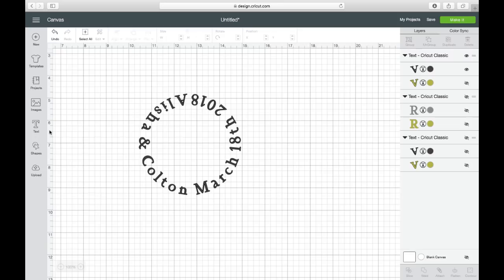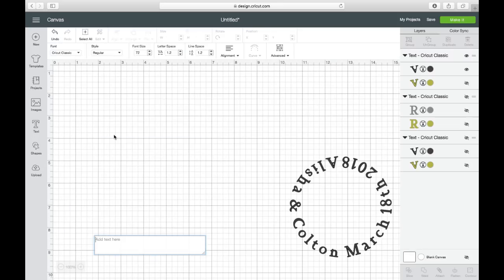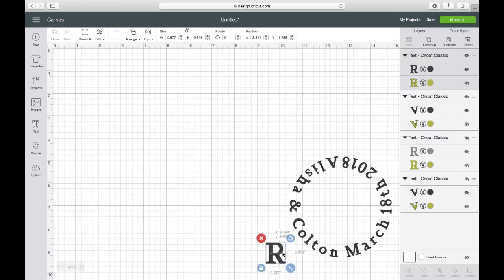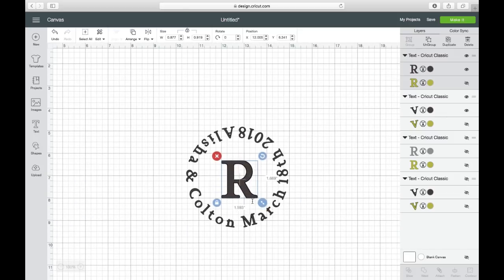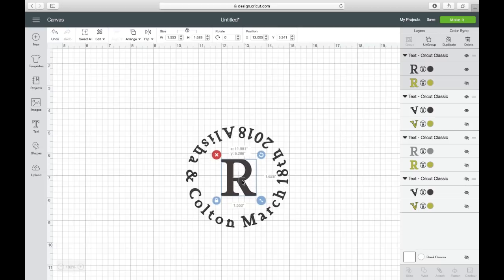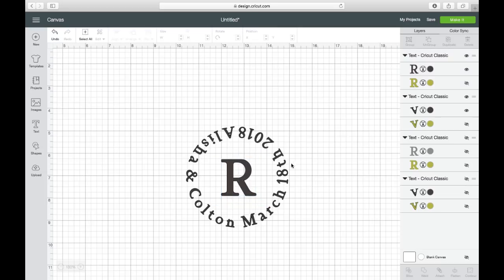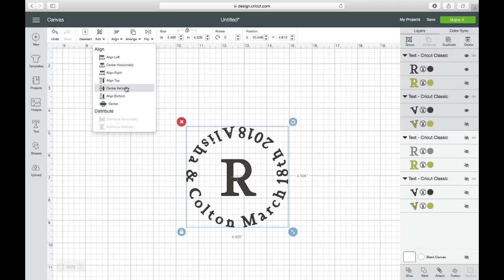So now I'm going to add an initial in the center. I would just come over here, take another piece of text. I'm going to put an R, and I'm going to come in the center just like this. Then I'm going to bring it into the size that I want it. So say that I like it just like that. I don't have to worry about having it centered, unless you're going to cut this all out one color. So if you want to cut this all out of the same color, what I would do is just select, and then I would come up here to align, and we would center vertically just like that.